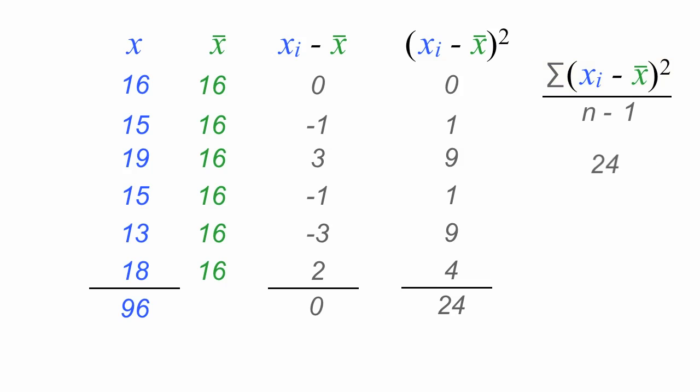So now I take 24 divided by n minus 1, or the number of observations minus 1. So again, the number of observations is 6. So 24 divided by 6 minus 1 is 24 divided by 5. So the variance is equal to 4.8.